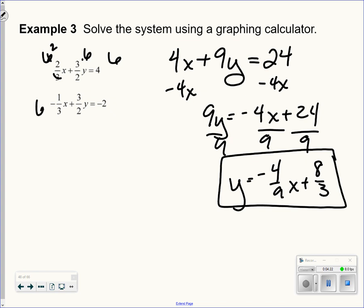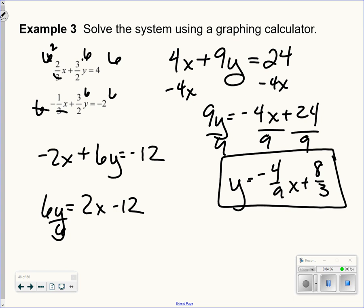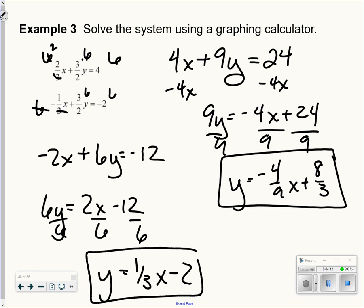Second one. Again, I'm going to multiply by 6. So I'm going to get negative 2x, 6y, and negative 12. So 6y equals 2x minus 12. Divide everything by 6. y equals 1 third x minus 2. So here's my second equation. I want to graph these. I'm going to move to a graphing calculator.